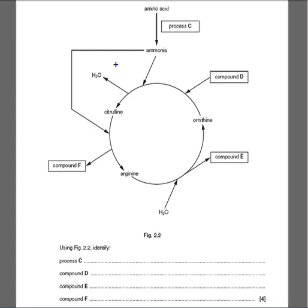And if we look at this, we've got an amino acid at the top here going to form ammonia here. I've shrunk this a little so it all fits on. And then we've got this huge cyclic set of reactions going on. So it says, using figure 2.2, identify process C. Well, this is the amine group being removed, forming ammonia. This is deamination.